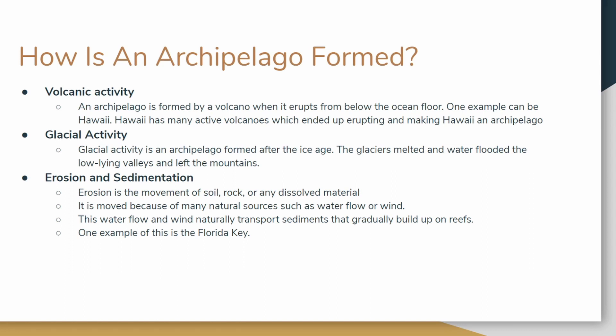Glacial activity is the second way an archipelago is formed. During the Ice Age, many big glaciers were formed — big, big glaciers. And when ice melts, water comes out. Think about how much water would have come out from those glaciers — a lot. This water flooded the low-lying valleys and left the mountains exposed, and the mountains became archipelagos because there were mountains separated with water in between.